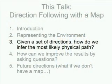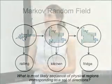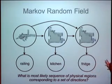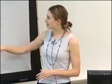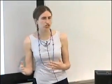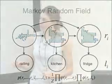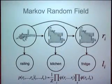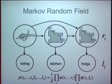When we get a set of directions, we think about a physical path as a series of topological nodes through our hybrid metric environment. We pose this as a global inference problem: what's the most likely sequence of physical regions corresponding to a set of directions? We put this as a graphical model — specifically a Markov random field. Throughout the talk, R refers to topological nodes consisting of metric sub-maps, and L refers to landmarks like railings, kitchens, or fridges.